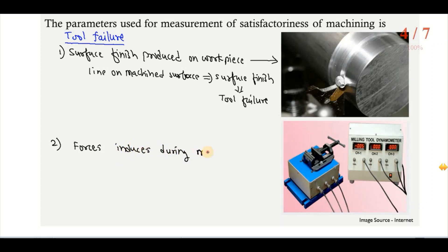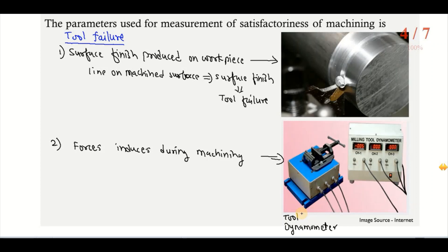The second parameter is forces induced during machining operation. The forces which are generated in the machining operation can be checked using a tool dynamometer. You can see this is a milling tool dynamometer — the images are taken from the internet. By connecting the dynamometer to the work table, the forces in machining will be measured online.